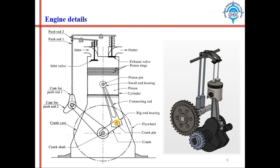The other end of the crank is connected to the connecting rod through a pin joint. In the figure, this link is called the connecting rod. The bottom end is larger compared to the top end — a larger bearing is present at the bottom and a smaller bearing at the top. The larger end of the connecting rod is connected to the crank with a pin joint.